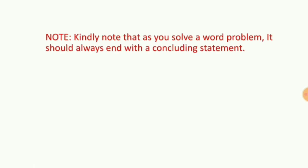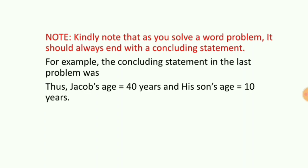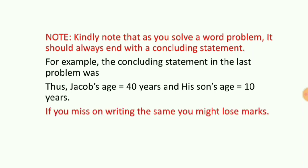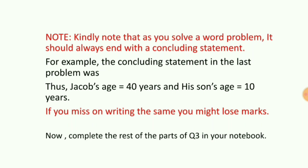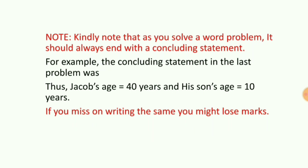Remember, it is a word problem so answers must be in words. The concluding statement is: Jacob's age is 40 years and his son's age is 10 years. You cannot leave the answer as x equal to 40 and y equal to 10 — that is not correct, and you might lose marks. Please complete the rest of the parts of question 3 in your notebook as homework. I hope the session was clear and the substitution method is well understood. In case of any doubt, watch the video again and let me know. Thank you so much.